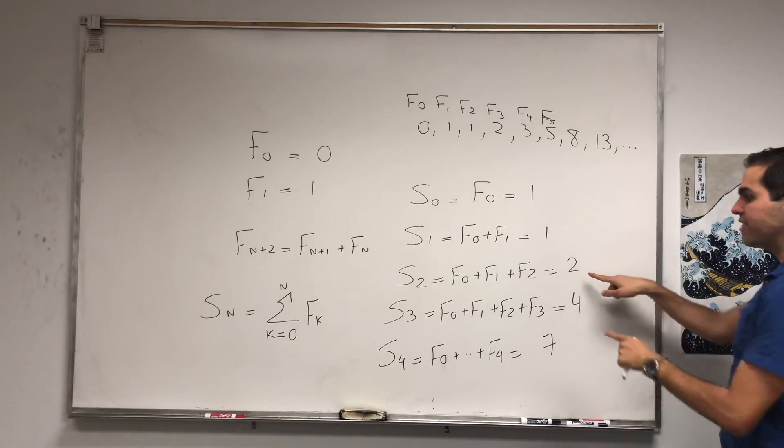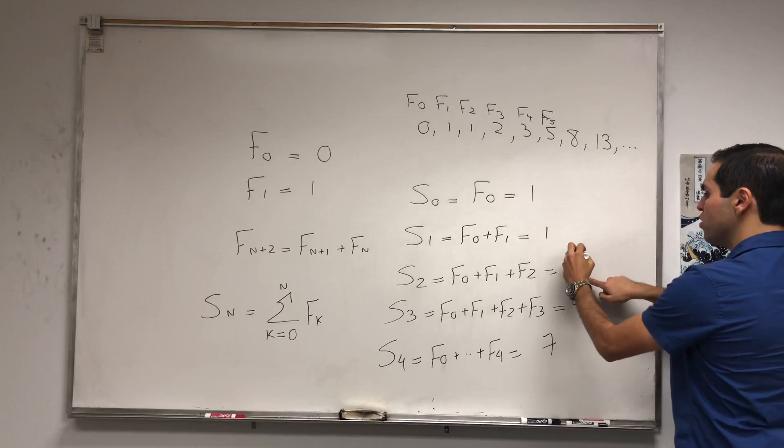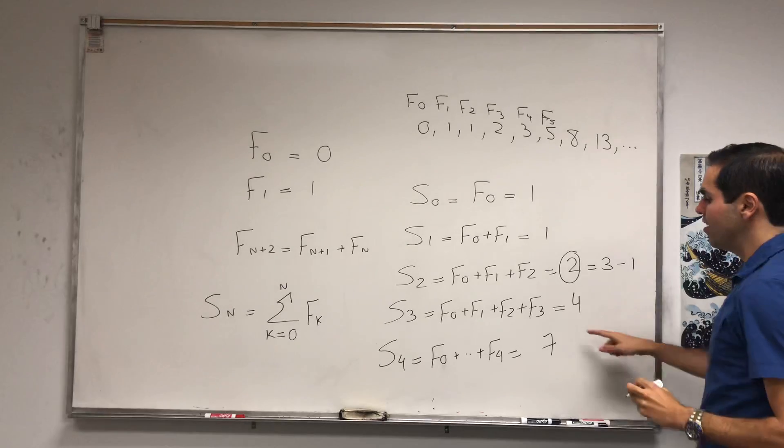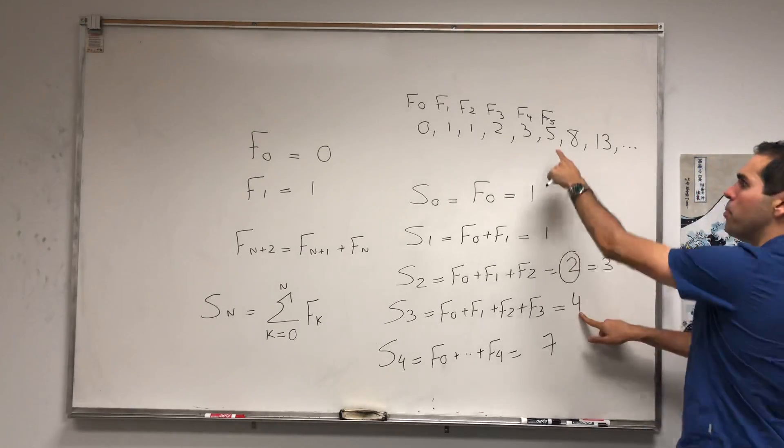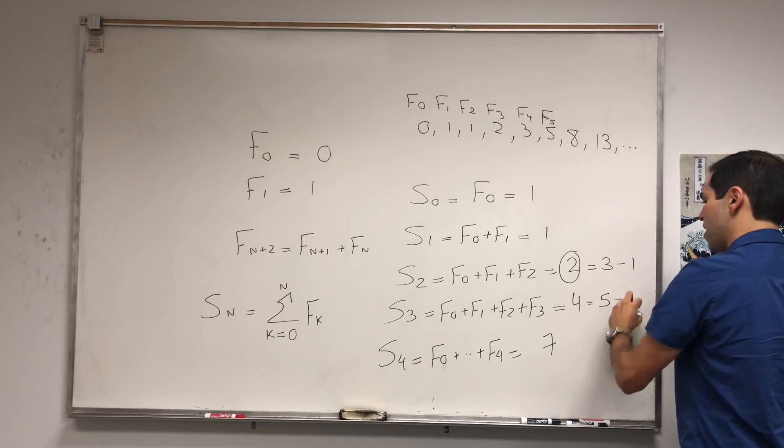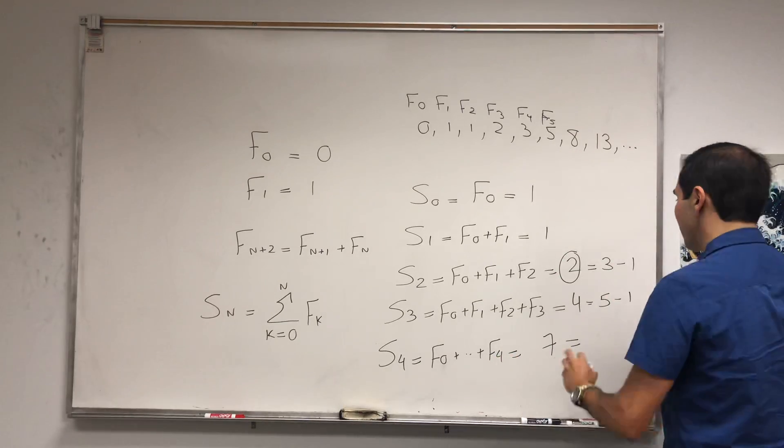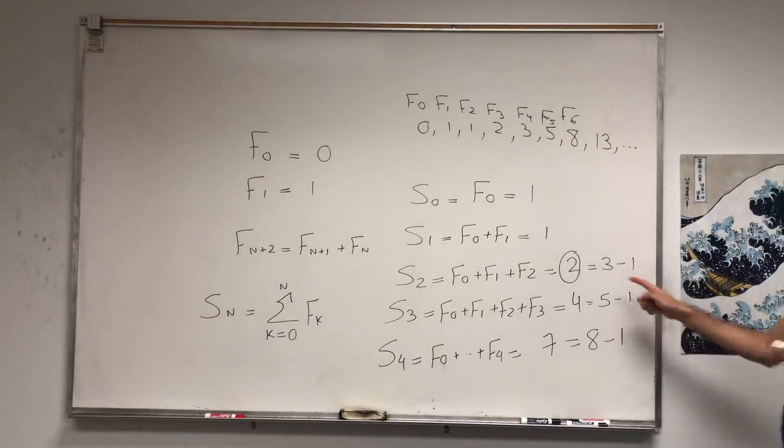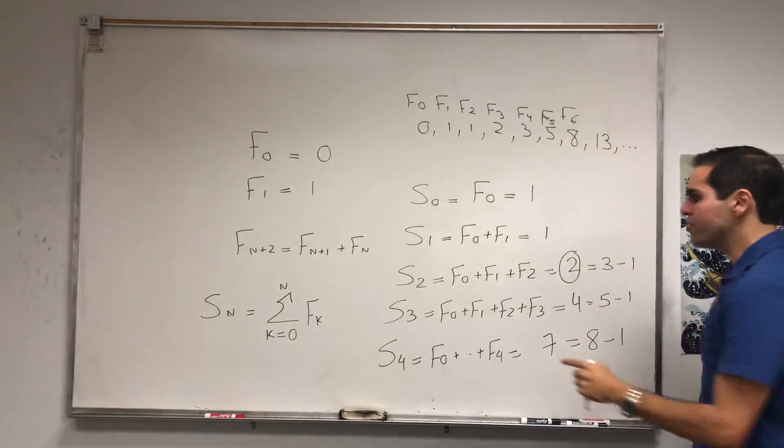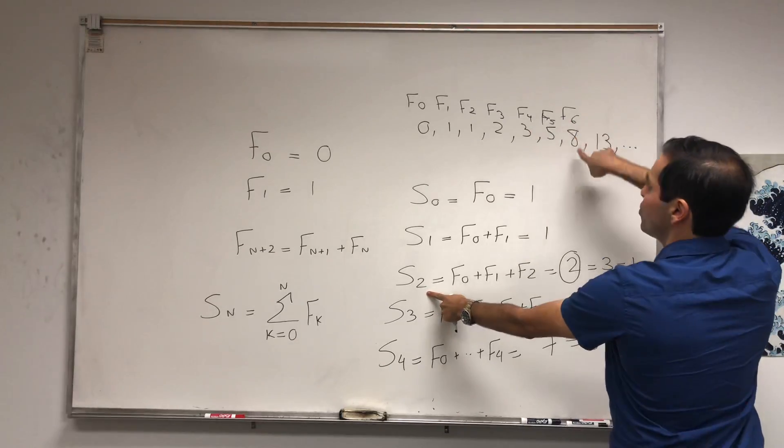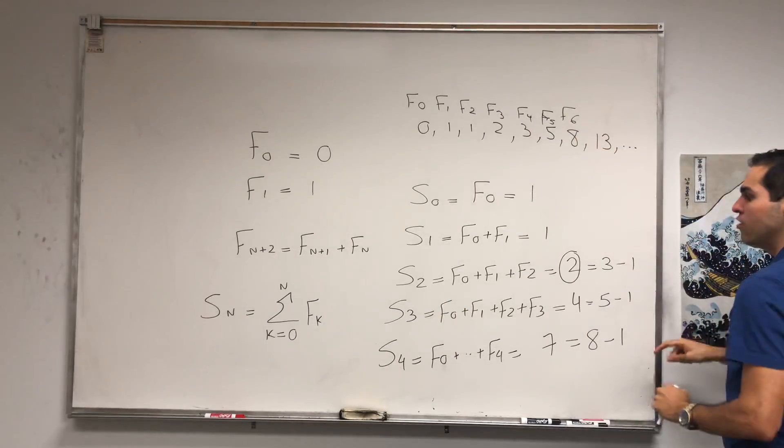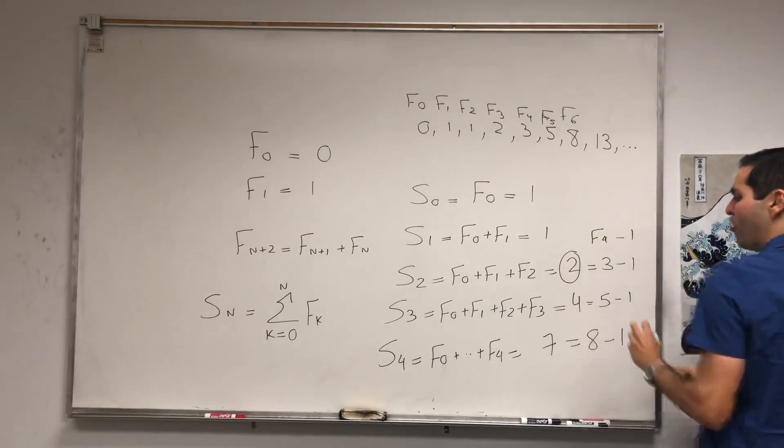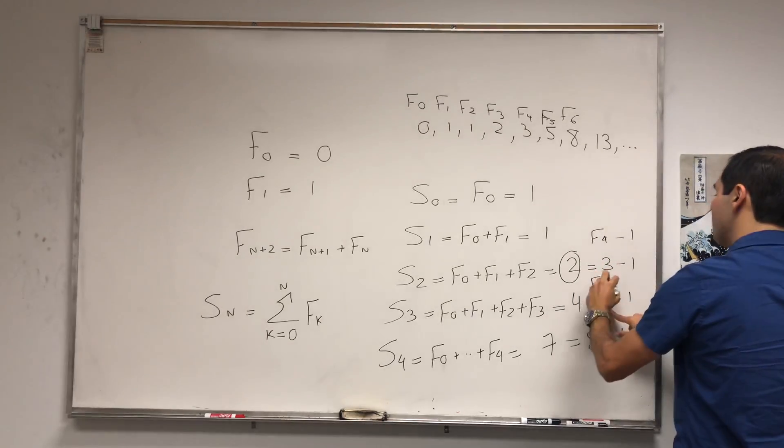For example, let's look at S2—that is 2, but which is also 3 minus 1. S3, that's 4, but that's 5 minus 1. S4, it's 7, but that's 8 minus 1. So in particular, notice to calculate those sums there's an easier way: you just take a certain Fibonacci number and subtract 1 from it.